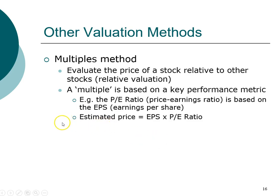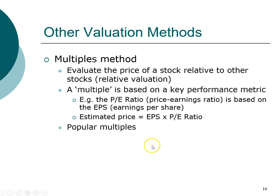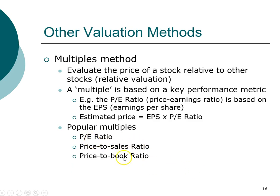The advantages of the multiples method are that it is relatively straightforward to apply, and if the metric is chosen correctly and is reliable with sufficient information, it is useful. The downside is that oftentimes there may be problems with those metrics. Other popular multiples include the price-to-sales ratio — looking at revenue rather than earnings — and the market-to-book ratio, which compares market price to the book value per share of the stock.